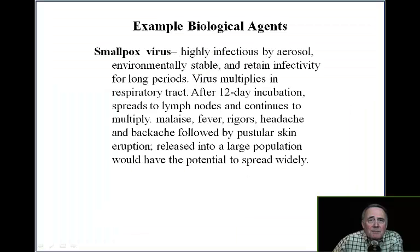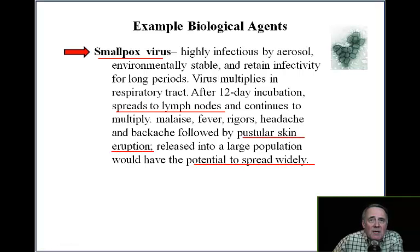A final example of a biological agent is the smallpox virus. This virus is highly infectious by aerosol, environmentally stable, and retains infectivity for very long periods. The virus multiplies in the respiratory tract. After a 12-day incubation period, it spreads to the lymph nodes and continues to multiply. Symptoms are malaise, fever, rigors, headache, and backache, followed by pustular skin eruption. If released into a large population, it would have the potential to spread widely.